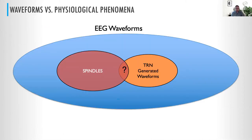I want to make very clear that when I talk about spindles, I'm talking about a waveform. As of now, from the EEG alone, we do not have the capability to know from whence a waveform is derived. We are talking about phenomenology of the waveforms, some of which are generated from specific mechanisms, but we can't tell.